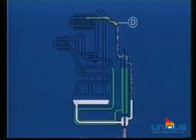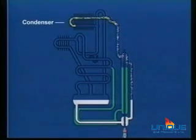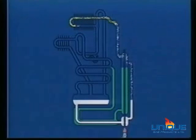Rising through pipe D, the ammonia vapor reaches the condenser, being converted into liquid again.